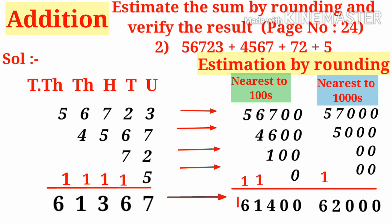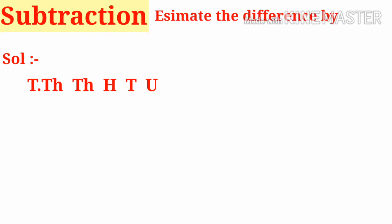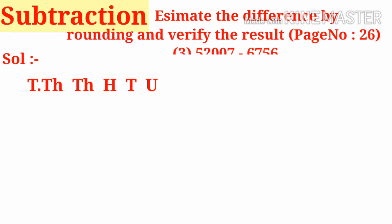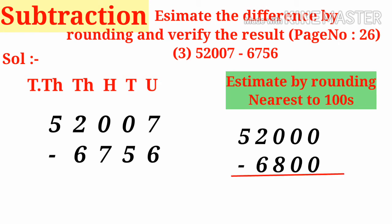Next, in subtraction, let us take a problem: estimate the difference by rounding and verify the result. Page number 26 in the textbook, third problem: 52007 minus 6756. Write these numbers in their place values exactly. Now estimate by rounding these numbers to the nearest hundred — the first becomes 52000 and the second becomes 6800.